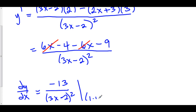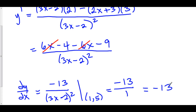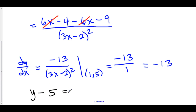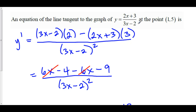At the point 1 comma 5, we plug in 1. We get negative 13 over 3 times 1 is 3, minus 2 is 1, squared gives us 1. So the slope of our tangent line at the point 1 is negative 13. And so we have point-slope form: y minus 5 is equal to our slope, negative 13, times x minus 1. And here is the tangent line of y equals 2x plus 3 over 3x minus 2 at the point 1 comma 5.